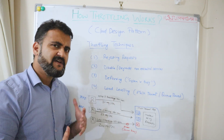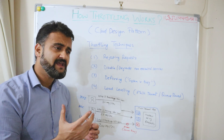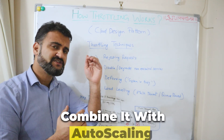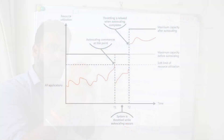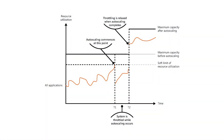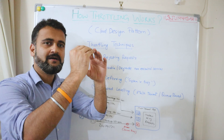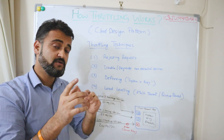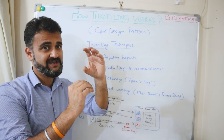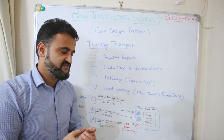You can also combine throttling with auto scaling. As mentioned, auto scaling your environment needs a certain amount of time. During that time, if you use throttling you can protect your system from downtime. The moment your system auto scales, everything comes back to normal. Combining the throttling pattern with the auto scaling pattern ensures your system performs as per expectation as a whole.